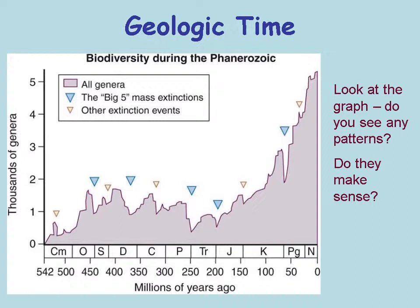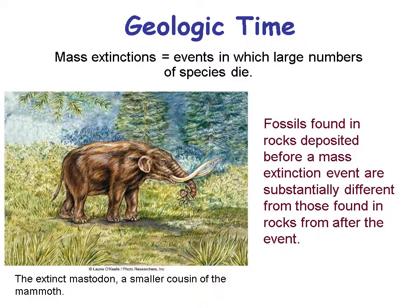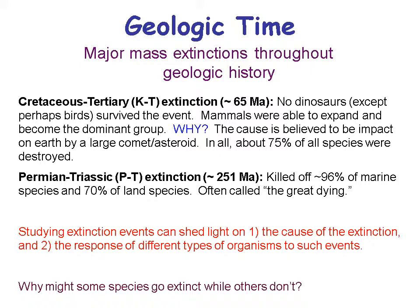We think each of those mass extinctions conforms to a near-Earth object that hit the Earth, but we're still looking for that evidence — that's a hypothesis at this point. A mass extinction is when a large number of species die. From one side of a mass extinction to the other, one type of rocks has one type of species, and the rock above it has a different type of species.